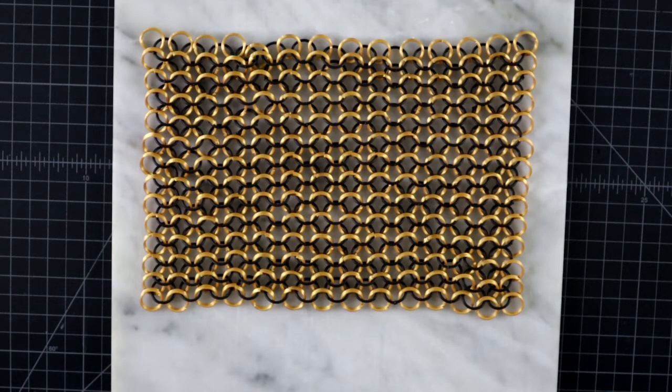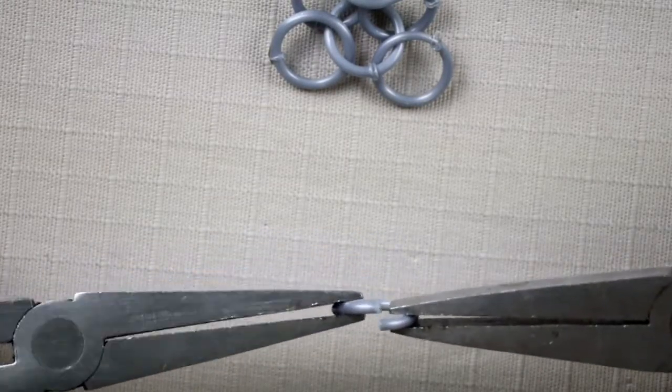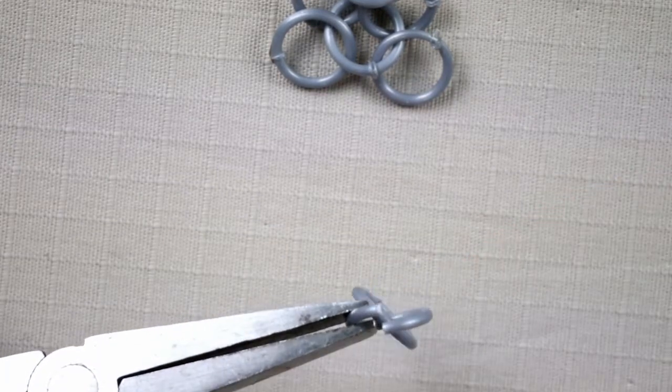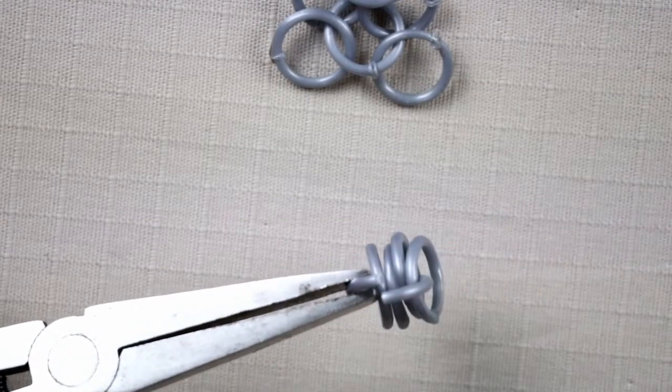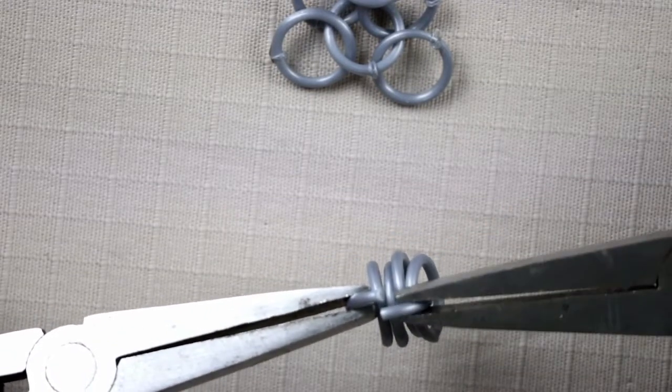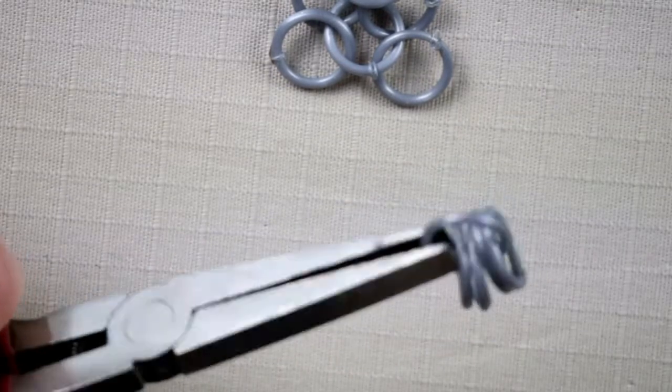By the way, always open and close the jump rings sideways like you would if you were working in real metal. Gets a bit more confusing without the color coding. But I bet by now you are starting to see the pattern too.